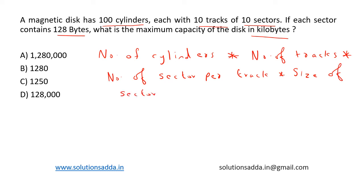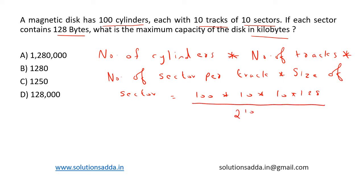So we have 100 × 10 × 10 × 128, divided by 2 to the power 10, since we are finding the capacity in kilobytes. This gives us 10 to the power 4, multiplied by 2 to the power 7, divided by 2 to the power 10.